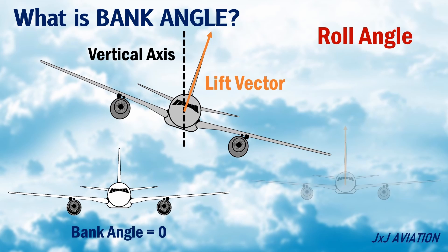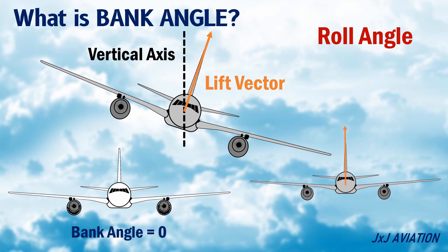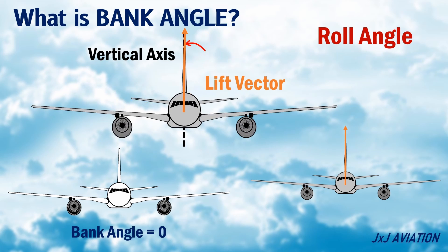When the aircraft rolls towards the left or the right, the lift vector gets tilted. So the bank angle can also be defined as the angle an aircraft needs to rotate in order to bring the wings level and the lift vector vertical.